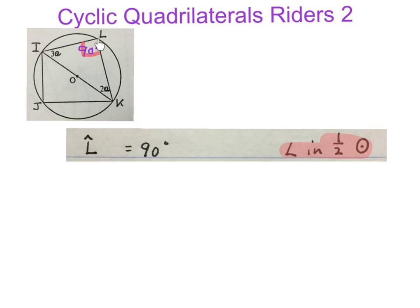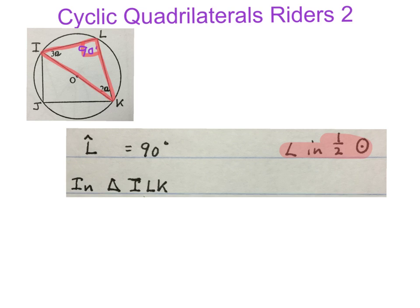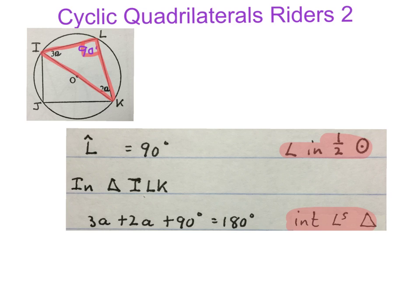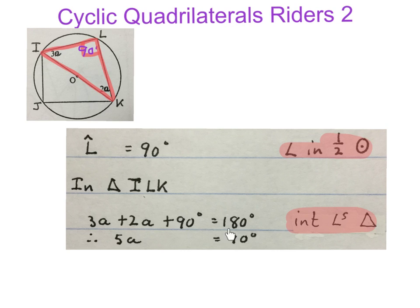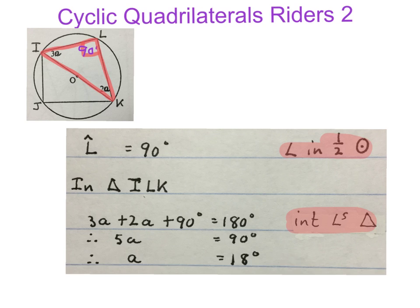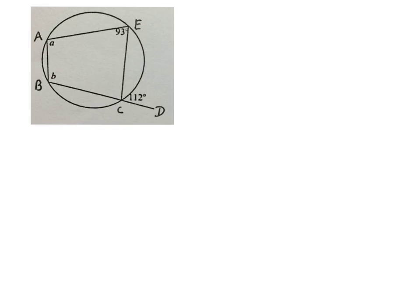Now we go into triangle ILK, the red one. We know that 3A plus 2A plus 90 degrees will add up to 180 degrees — interior angles of a triangle. We minus the 90 degrees from the 180 and add the A's, giving 5A equals 90. Dividing by 5, we get A equals 18 degrees.